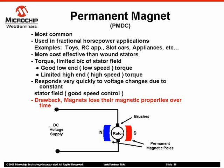The torque from a permanent magnet brush DC motor is limited by the stator field, which gives it good low end or low speed torque and limited high end or high speed torque. The permanent magnet brush DC motor responds very quickly to changes in voltage. This is due to the consistent stator field, giving it good speed control capabilities. However, permanent magnet brush DC motors will lose their magnetic properties over time, degrading the stator field and causing motor performance to decline.